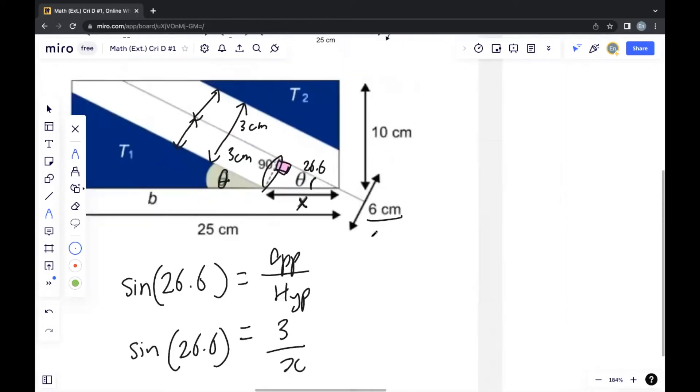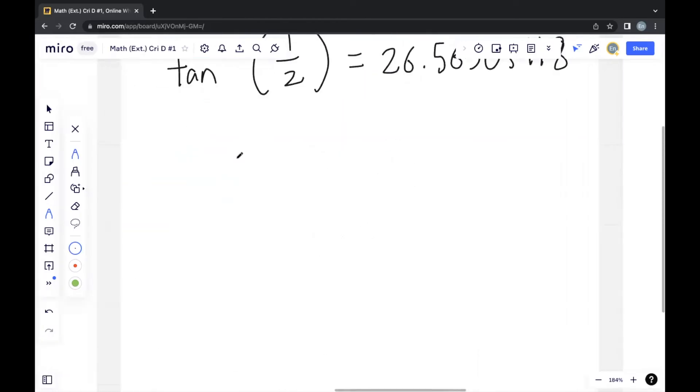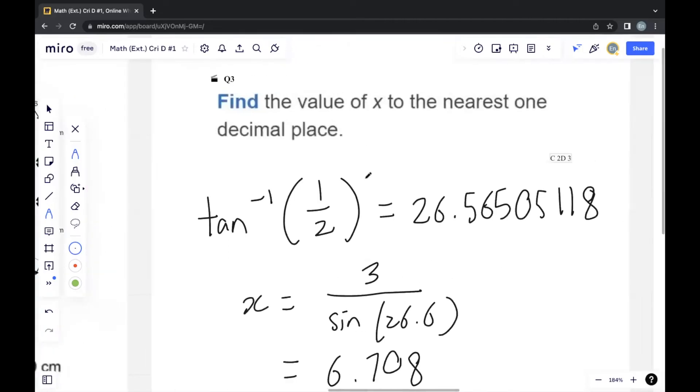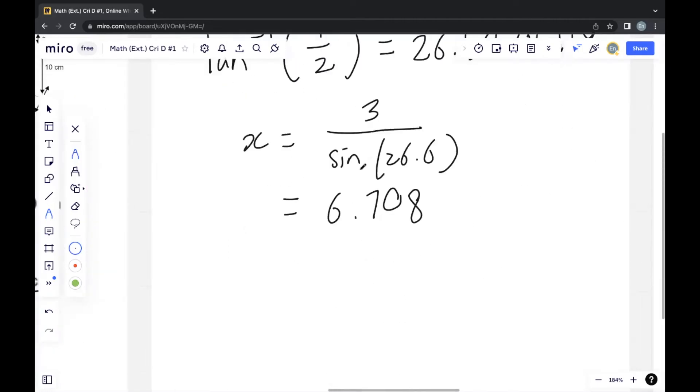So x equals 3 divided by sine 26.6, which gives us 6.708. The question wants the value of x to the nearest one decimal place, so the answer is 6.7.